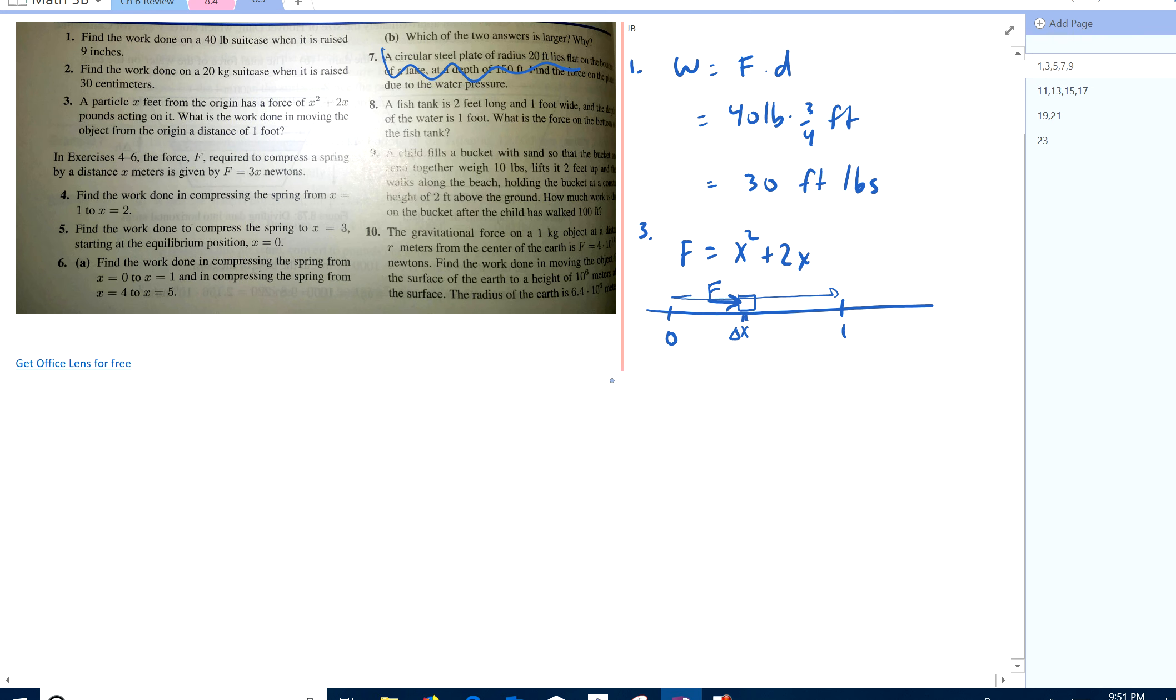I know the work done to move delta x is given by f times delta x or x squared plus 2x times delta x. Now if I want to add the work done up over these pieces of delta x's, and then if I let delta x go to 0, of course, the total work will be the integral from 0 to 1 of x squared plus 2x dx.